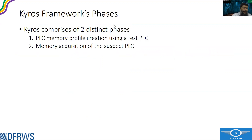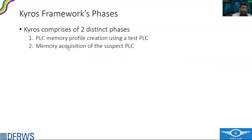The Kairos framework constitutes two phases. In the first phase, we create a memory profile using a test PLC. In the second phase, we use that profile to acquire the memory of a suspect PLC.